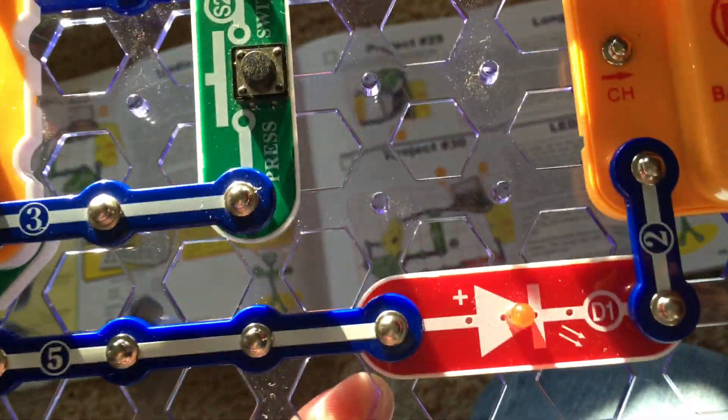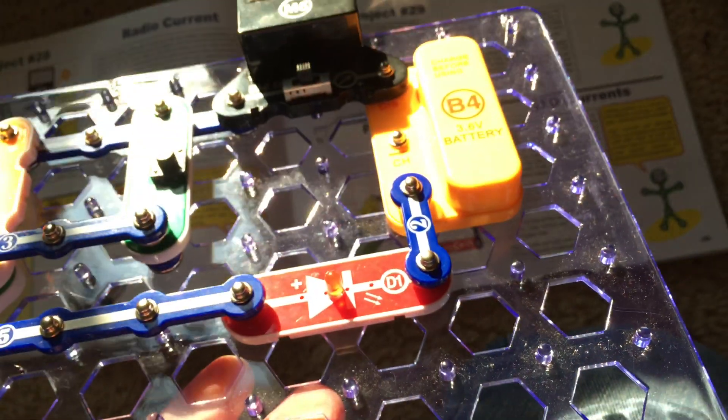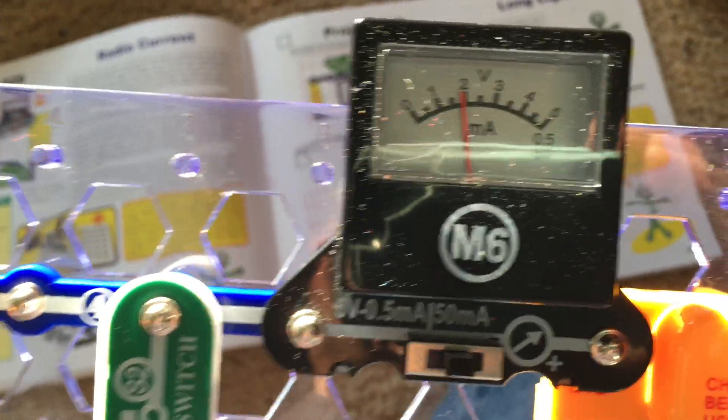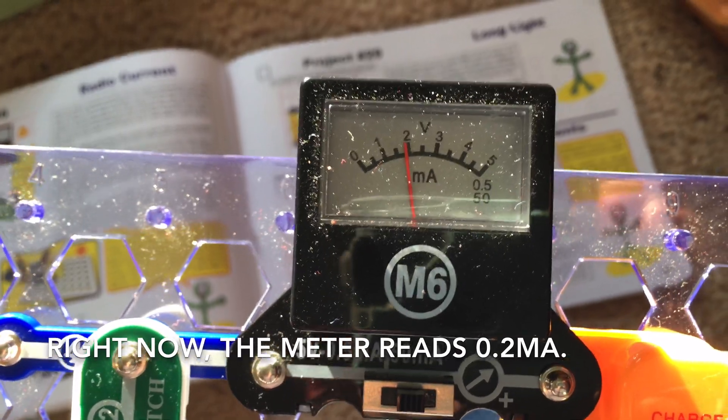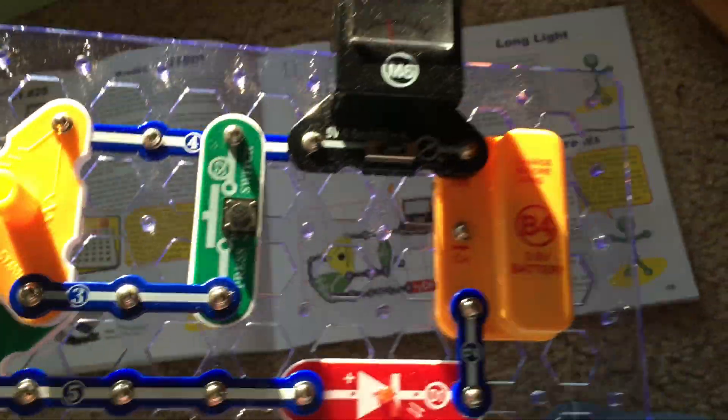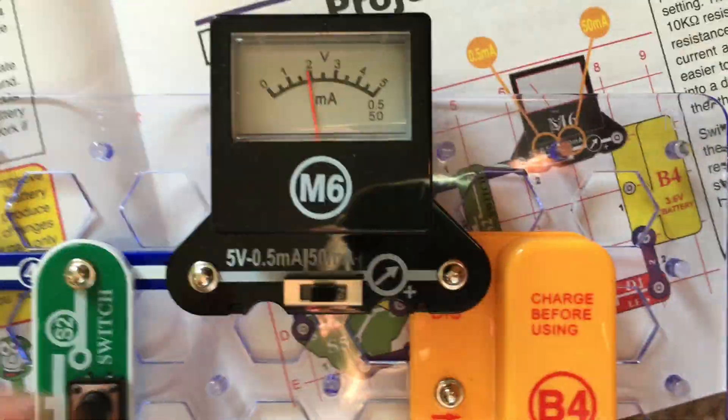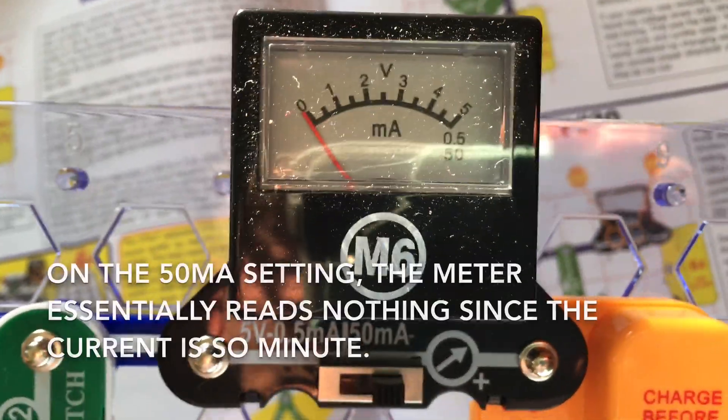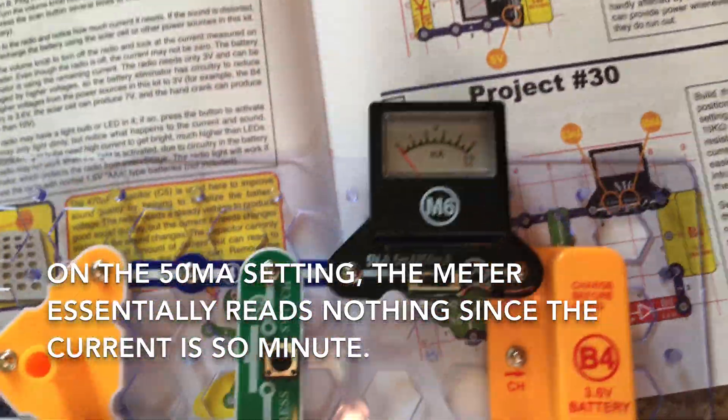Right now the red LED is pretty dim and in a bright area you may not be able to tell that it's on. The meter reads just under 0.2 milliamps, but when I move the switch on the voltage meter to the 50 milliamp setting, the meter essentially does not register anything because the current is so minute.